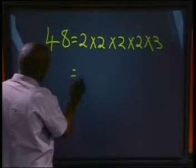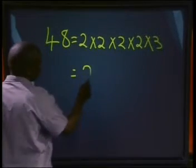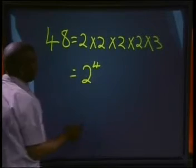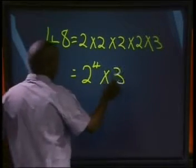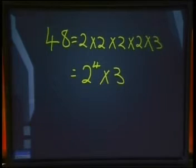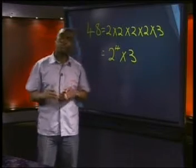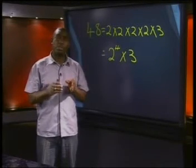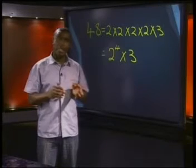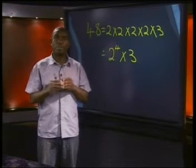So how many 2s do we have? 1, 2, 3, 4 — so it's 2 to the power 4 times 3. This was fun, don't you think? Let's do the next one together. I want you to fill in the empty boxes — get paper and pen. Then you have to write the number as a product of prime numbers. The number is 108.